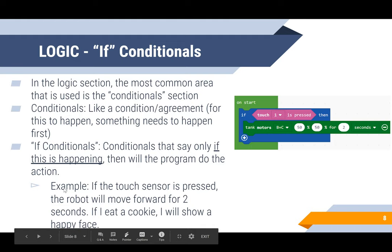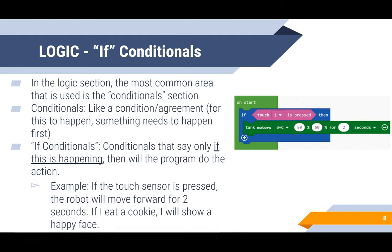The last type of coding block that we're going to talk about is the logic blocks. There are many different varieties or types of blocks in the logic section, but the most common area that is used is the conditionals section. Conditionals are like an agreement, which essentially means for this thing to happen, something needs to happen first.